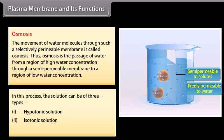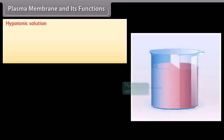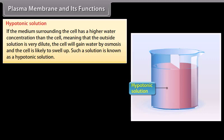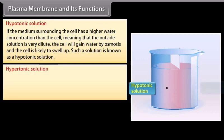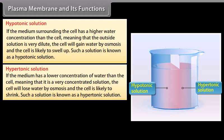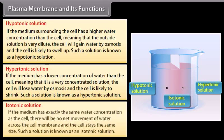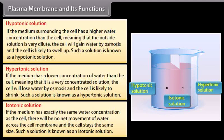Hypertonic solution: if the medium surrounding the cell has a higher water concentration than the cell — meaning it is a very dilute solution — the cell will gain water by osmosis. If the medium has a lower concentration of water than the cell — meaning it is a very concentrated solution — the cell will lose water by osmosis and is likely to shrink; such a solution is known as a hypertonic solution. Isotonic solution: if the medium has exactly the same water concentration as the cell, there will be no net movement of water across the cell membrane and the cell stays the same size; such a solution is known as an isotonic solution.